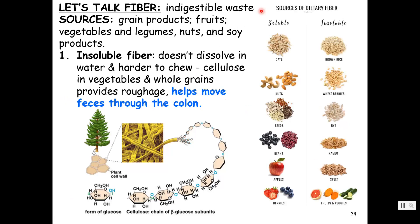Fiber is our indigestible waste. Sources include grain products, fruits, vegetables, legumes like beans and peas, nuts, and soy products. Insoluble fiber doesn't dissolve in water — think of things that are harder to chew, like fibrous foods, cellulose in vegetables, and whole grains that provide roughage. Plant cell walls are made of cellulose, and we can't break those beta-glycosidic bonds because we lack the enzymes. This insoluble fiber helps move feces through the colon.